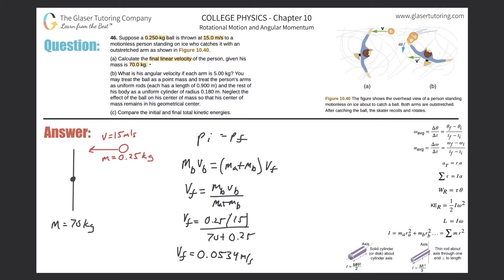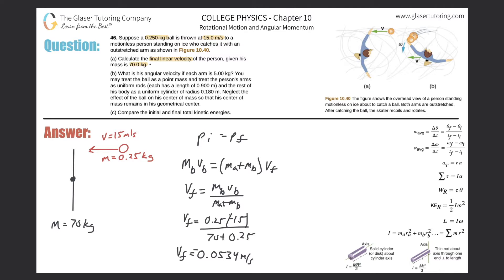Regarding sign conventions: if you consider the ball moving in the negative direction, this should also be negative. However, the magnitude is what's important here. The negative sign is left out for now because it becomes complicated when moving into rotational analysis.